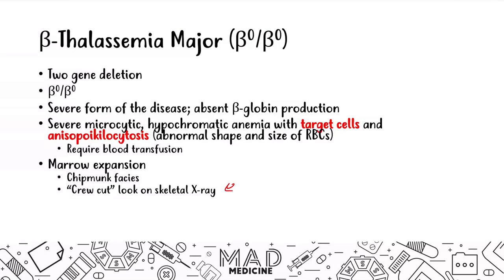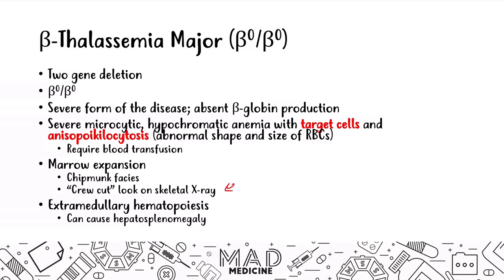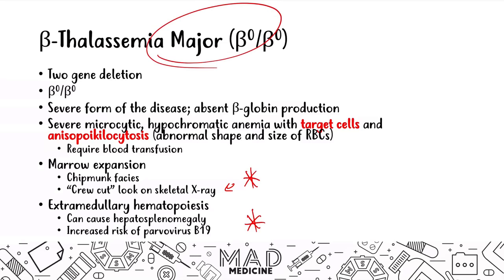Because you need to produce more red blood cells and your bone marrow expands to the highest degree, you are going to need to continuously produce more blood cells. So where else can you produce blood cells? It's going to be in your extramedullary locations — you are going to have extramedullary hematopoiesis occurring in the liver and the spleen. This can cause hepatosplenomegaly, and these patients are going to be at higher risk of developing a parvovirus B19 infection. Bone marrow expansion and extramedullary hematopoiesis with beta thalassemia major are very important.